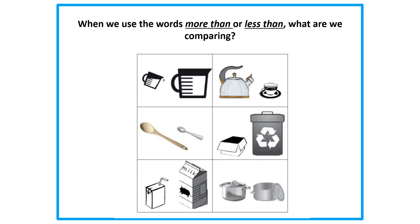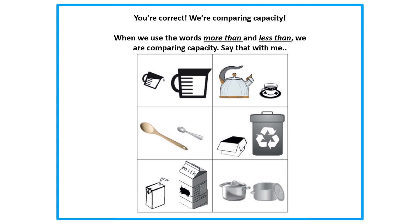Remember, when we use the words 'more than' or 'less than,' what do you think we're comparing? Think big. When we use the words 'more than' or 'less than,' what are we comparing? You're correct. We're comparing capacity. When we use the words 'more than' and 'less than,' we are comparing capacity. Can you say that with me? Get ready. When we use the words 'more than' and 'less than,' we are comparing capacity. One more time: when we use the words 'more than' and 'less than,' we are comparing capacity.